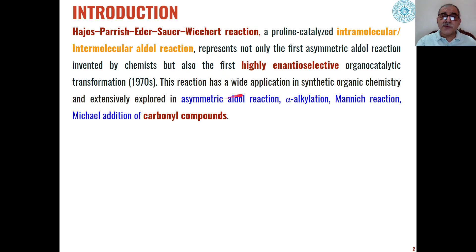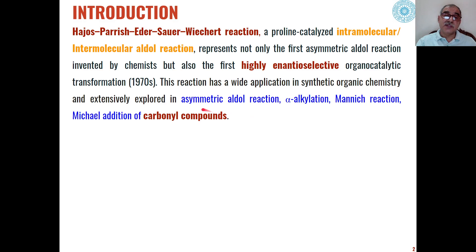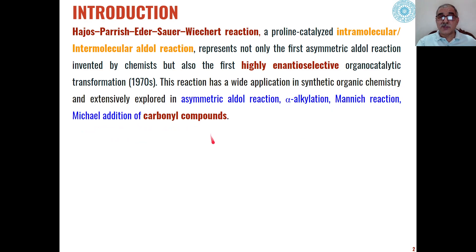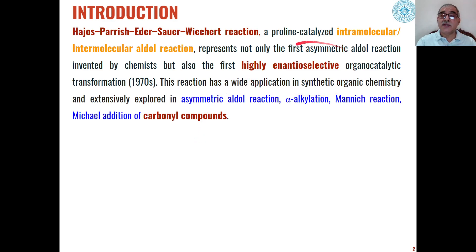Because of this, the products formed are highly enantioselective, and the reaction has wider applications in the synthesis of organic compounds through asymmetric aldol condensation, through alpha-alkylation, through Mannich reaction, and even Michael addition of carbonyl compounds. So different types of reactions involving carbonyl compounds give us asymmetric compounds which are highly enantioselective in nature.